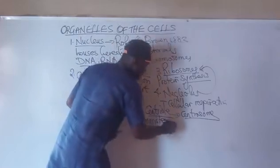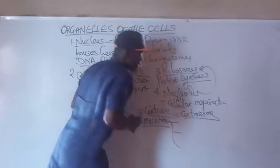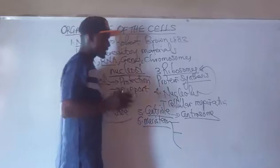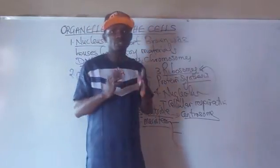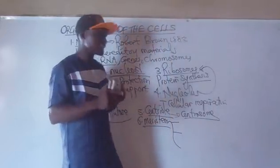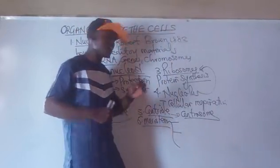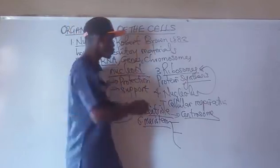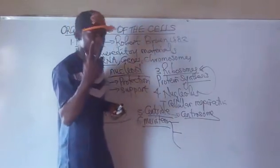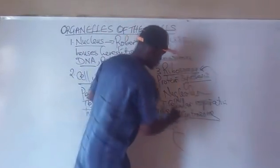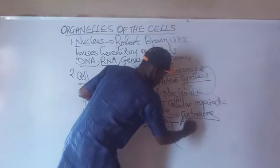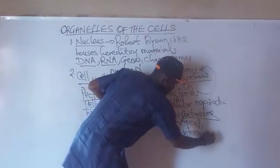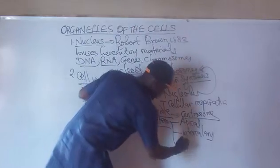The meristem is made up of cells that can actively undergo cell division — they can divide through mitosis. The cells that make up the meristem tissue can undergo continuous mitotic division. We have three types of meristem: the apical meristem, the intercalary meristem, and the lateral meristem.